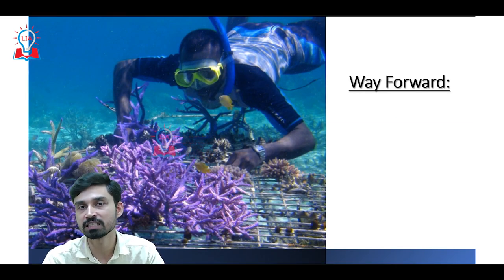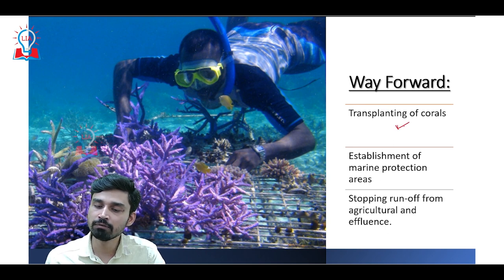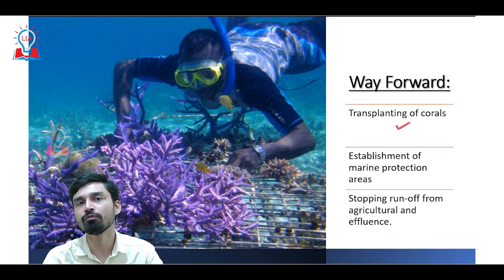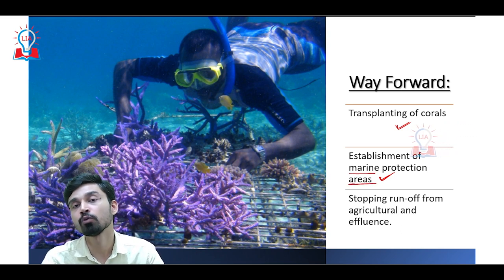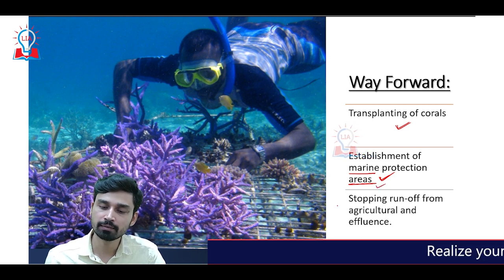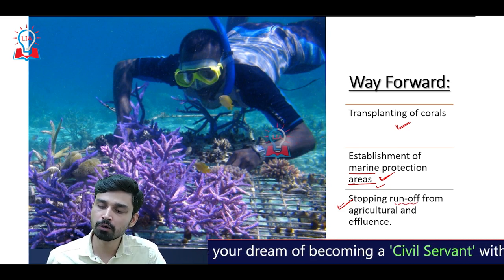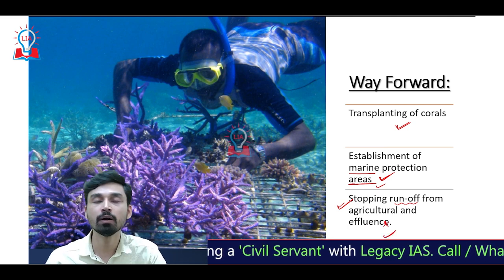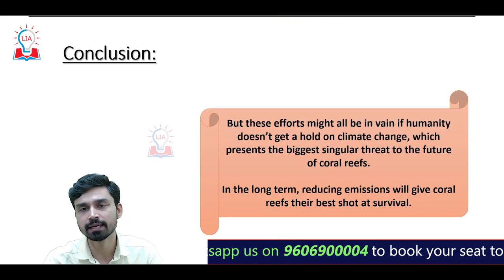As for how corals can be protected, at the local level, transplantation of corals can be done — as has been attempted in India near the Malvan coast of Goa and near the Mangalore coast of Karnataka. Some countries and states have also worked toward establishing marine protected areas so that corals are not subjected to huge pressure from tourism, underwater diving, or economic exploration. Most importantly, since higher pollution levels will naturally kill corals, stopping polluted agricultural runoff and untreated industrial effluent discharge can go a long way in ensuring the health of corals.